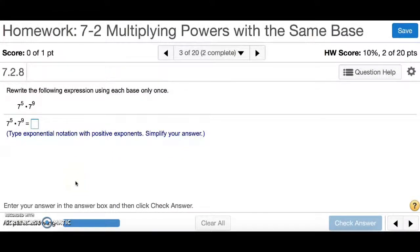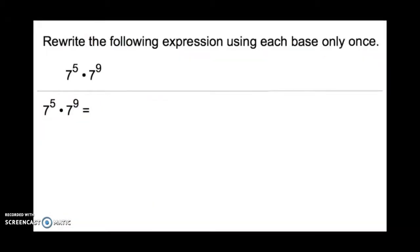Number 3 is asking you to rewrite the following expression using each base only once. We have 7 to the 5 times 7 to the 9. When the bases are the same and we're multiplying, we add the exponents. So we'll have 5 plus 9 in the exponent, and we'll get 7 to the 14. So let's type that in.